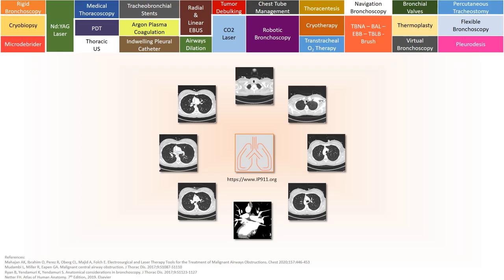In summary, there is a close relationship between the tracheobronchial tree and the intrathoracic blood vessels. A good understanding of this relationship is important for safe and effective bronchoscopy. This concludes our video. For any comment or suggestion, please visit us at our website. Thank you very much for your attention. Goodbye.